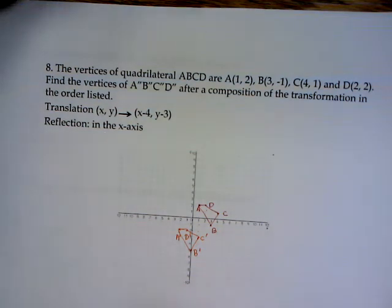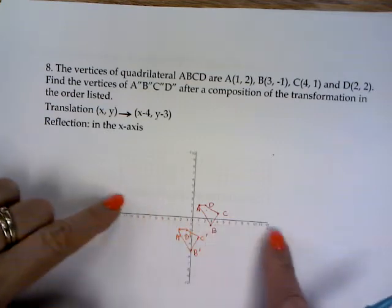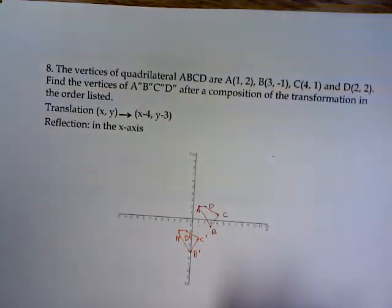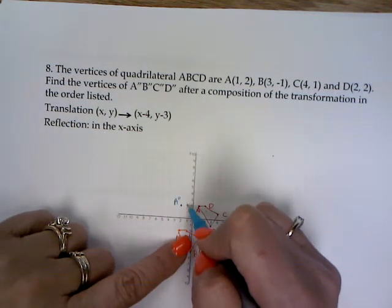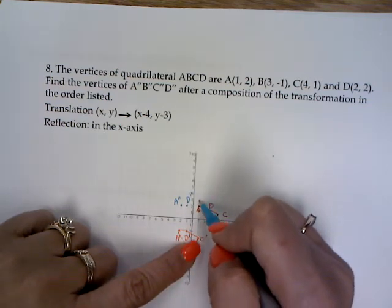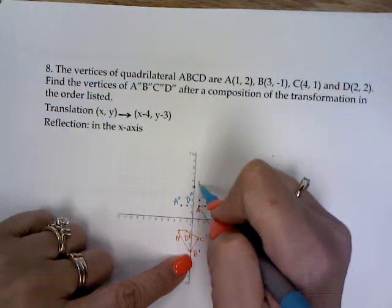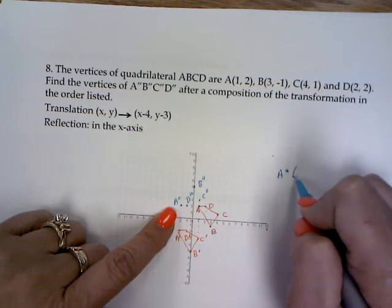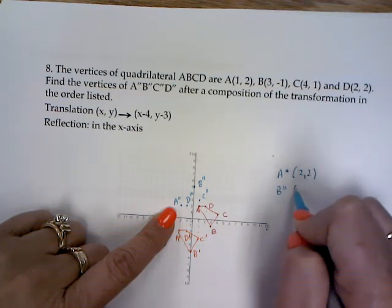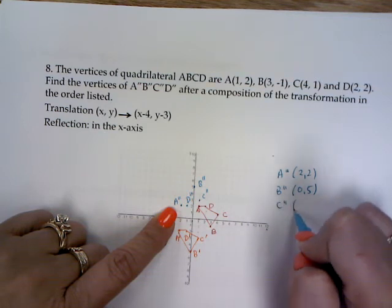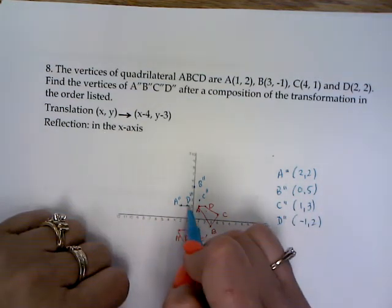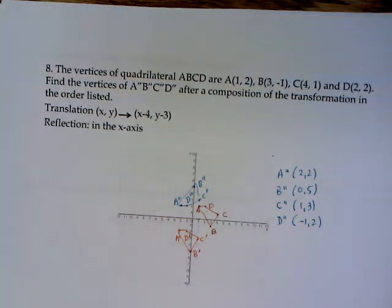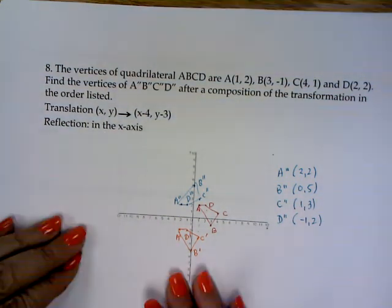Now I want to do my reflection. My reflection across the X means that here is my X axis. It now will be on the other side. And again, you could use the rule for these or you could graph them. So A double prime because it wants the coordinates. And again, this could be a multiple choice question that just says, where are my coordinates after my composition of transformations? And it could be a multiple choice question. So you need to make sure you graph it or do the rule twice.